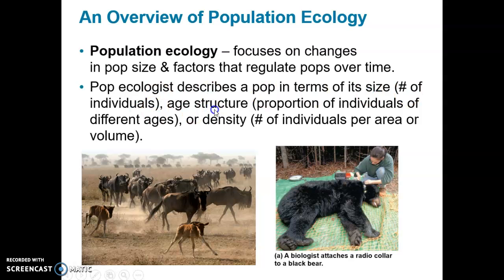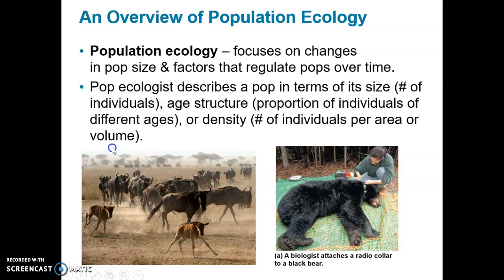Population ecologists describe a population in terms of its population size — the number of individuals — the age structure, which is the proportion of individuals at different ages, whether juvenile and immature or adults capable of breeding, and also density: how many individuals are in a particular area, like a number of wildebeest per square kilometer, or a volume, like the number of fish in a cubic yard of water.